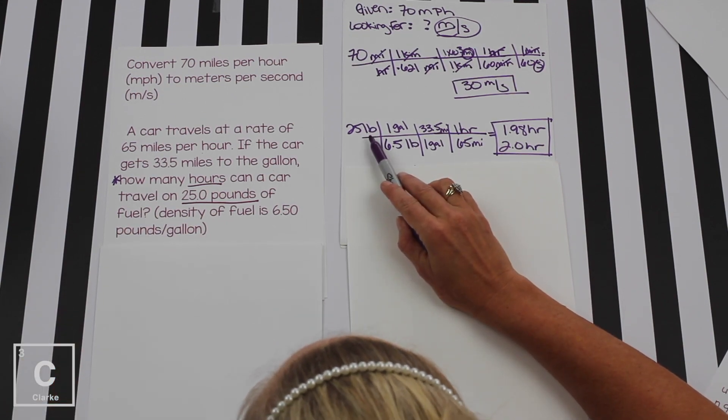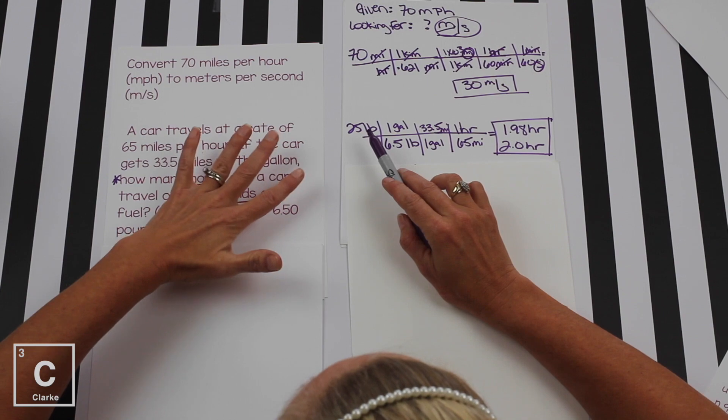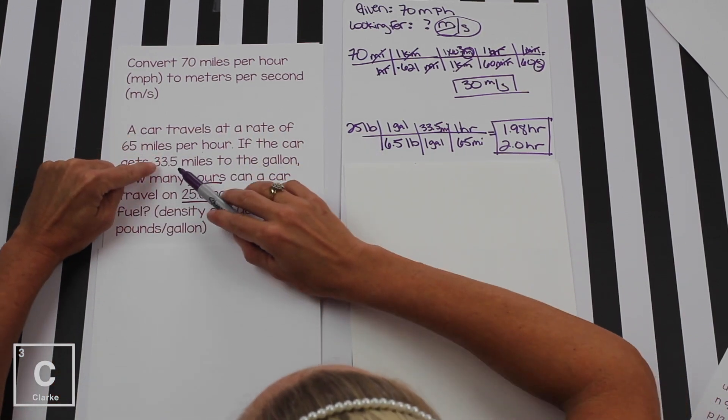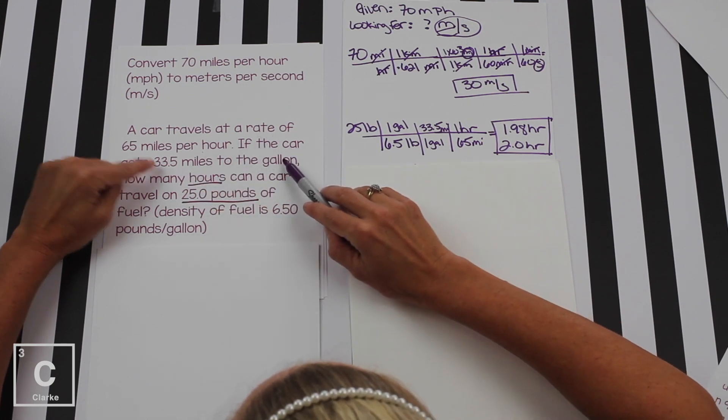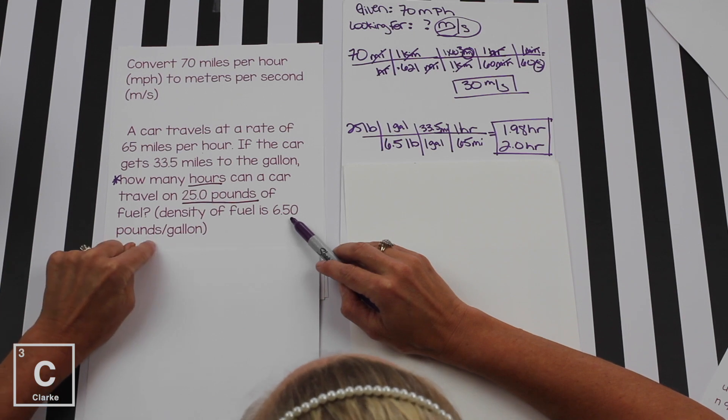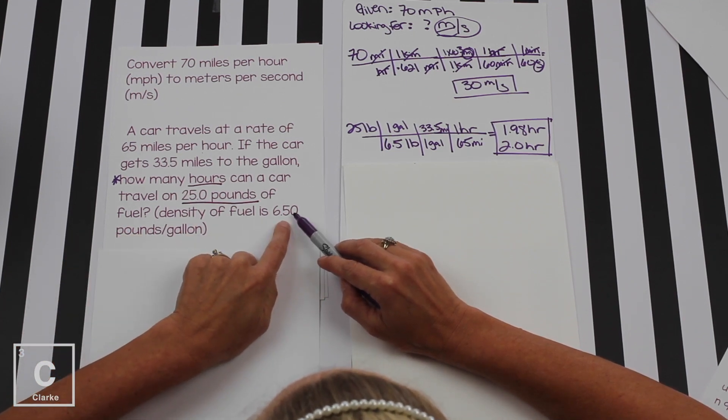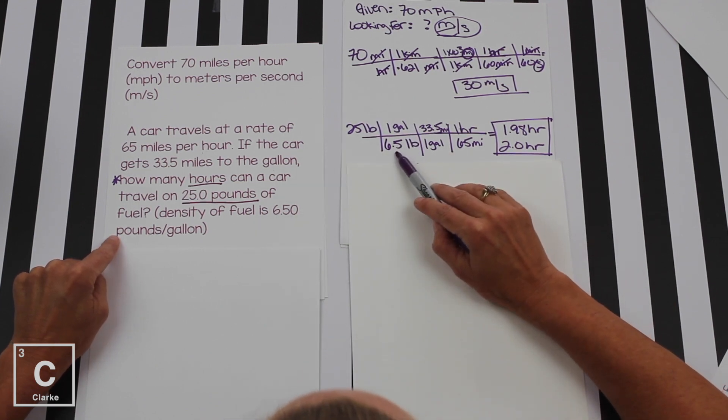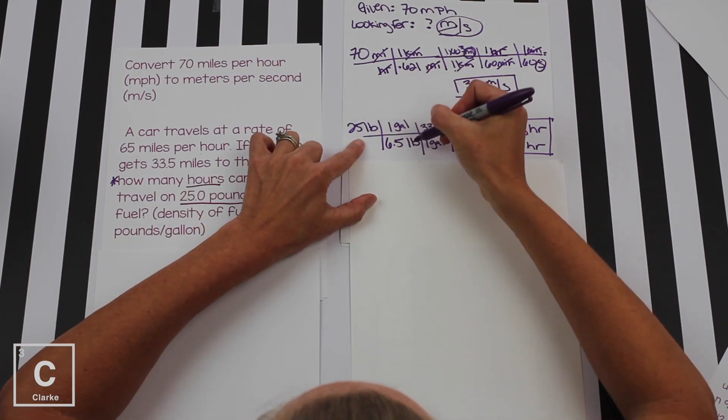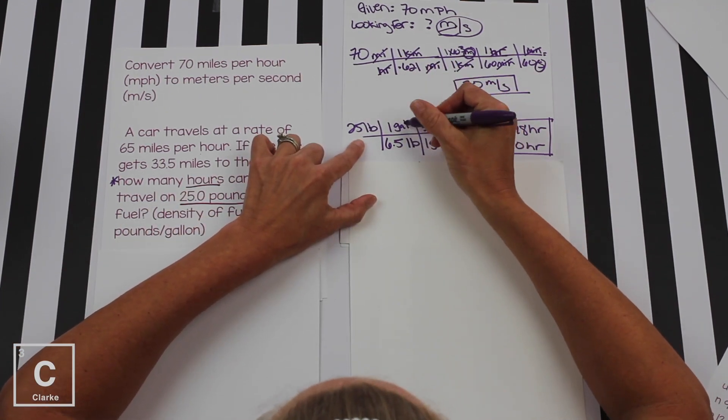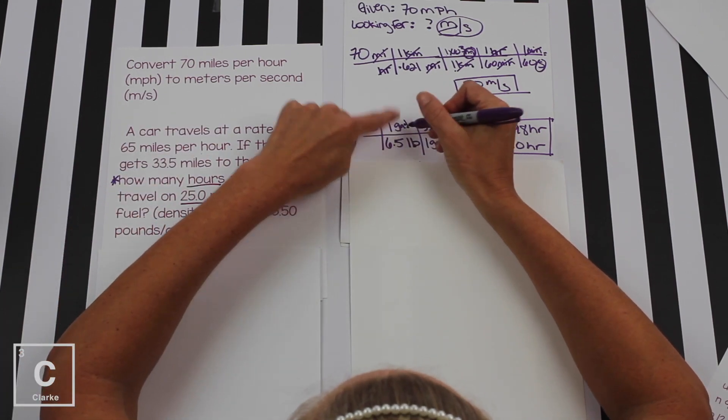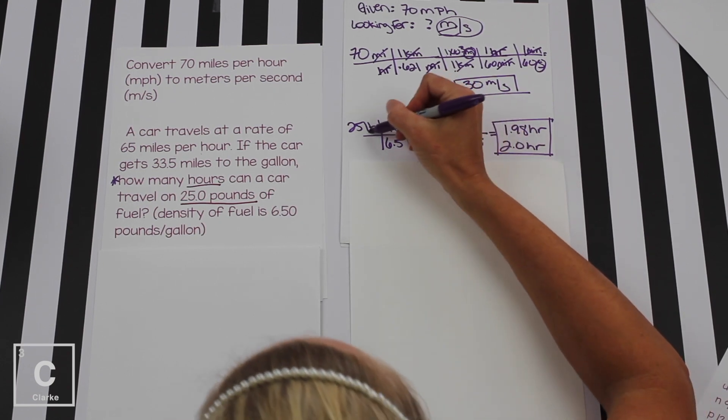All these other numbers in the problem, we're going to use those as conversion factors. So here's our given, 25 pounds. Now we need a conversion factor that has pounds in it. So we're going to look back at our problem and figure out what number that is. 6.5 pounds per gallon. Here it is. We finally found it. The 6.50 is connected to pounds. So we're going to leave the 6.5 wherever we put pounds. And since we started with pounds, pounds comes down to the bottom. Gallons goes on top. Pounds per gallon. It's okay that we flipped it upside down. And we're going to put our 6.5 with our pounds. So pounds cancels.